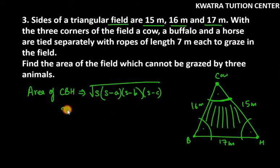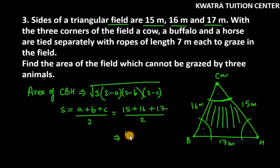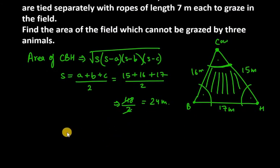So now first you need to find S. S is A plus B plus C over 2. So this is 15 plus 16 plus 17 over 2. So 15 plus 16 plus 17 is 48. 48 over 2, you get 24 meter. Now we can put the value of S, A, B and C to find the area of triangle CBH.